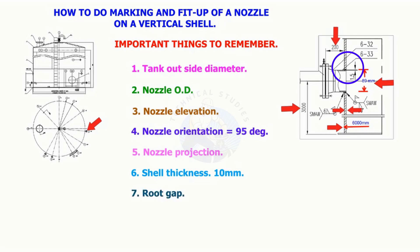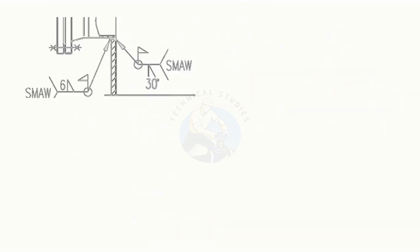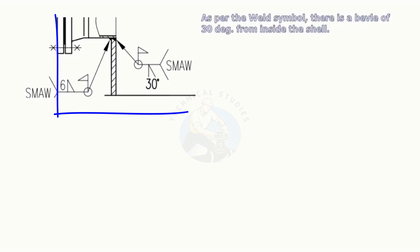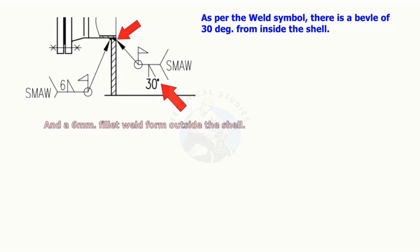Root gap and type of beveling. As per the weld symbol, there is a bevel of 30 degrees from inside the shell, and a 6 millimeter fillet weld from outside the shell.